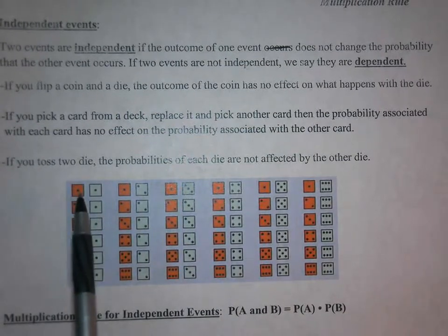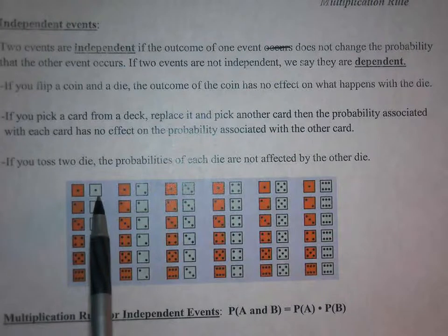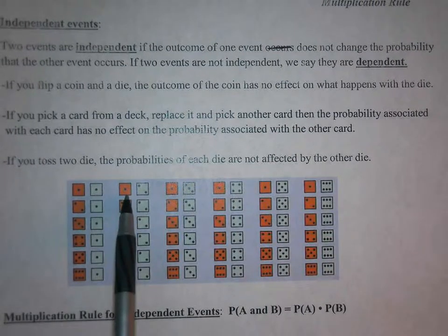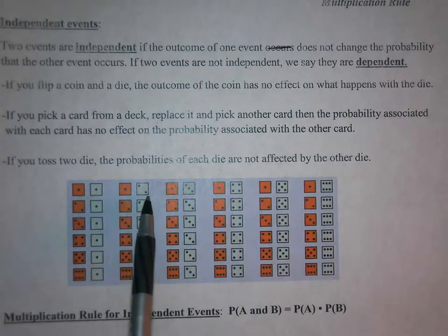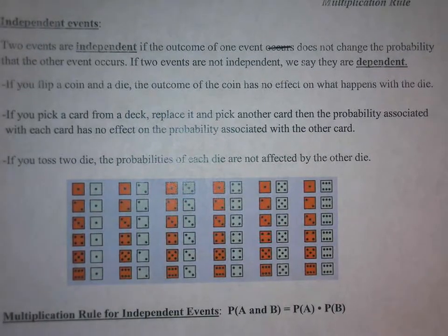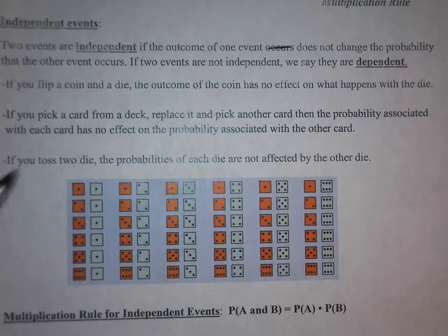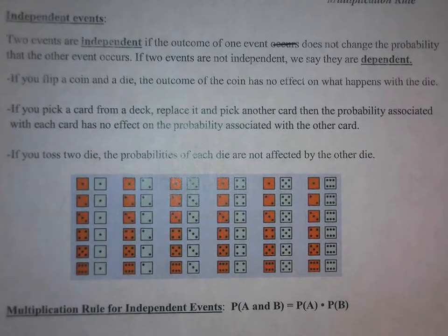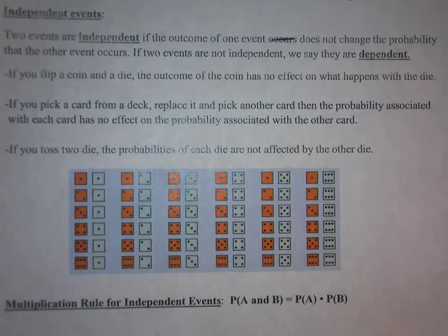On the first die you could have rolled a one, and the second one could also be a one, or a two, and so on. Notice there are 36 total possibilities — six going down and six across for a total of 36 possibilities.